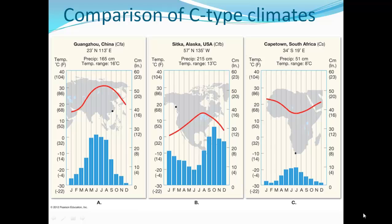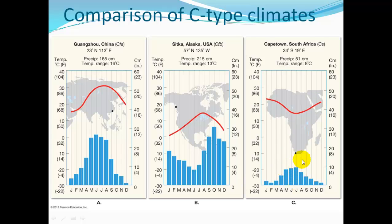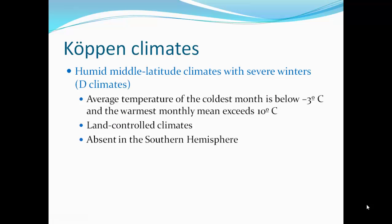Comparing C climate types: Guangzhou, China has a nice temperature range with most rainfall in summer and much less in winter. Pacifica, Alaska has cooler temperatures due to high latitude but lots of rainfall from moisture coming off the ocean. Cape Town, South Africa shows little temperature variability and, being south of the equator, experiences more rainfall in its winter months.